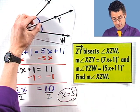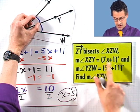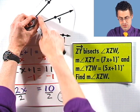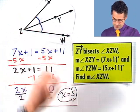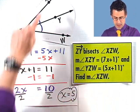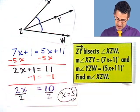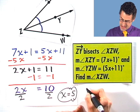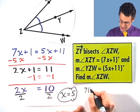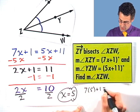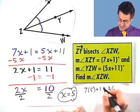Well, first I can plug it back into one of these expressions to find out what one of these measures is. So let's actually plug it in and find the measure of angle X, Z, Y. I'd plug in 5 for X here, and I'd see that that angle has measured 7 times 5 plus 1, or 36 degrees.